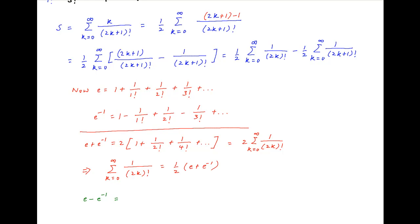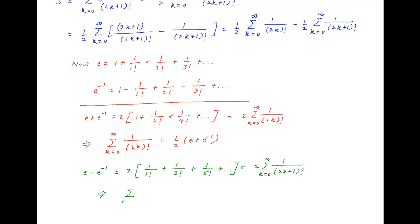Similarly, e − e⁻¹ = 2 times (1/1! + 1/3! + 1/5! + ...), and this can be expressed as 2 times the summation of 1 upon (2k + 1)!, where k goes from 0 to infinity. It therefore follows that the summation of 1/(2k + 1)!, k from 0 to infinity, is equal to half of (e − e⁻¹).